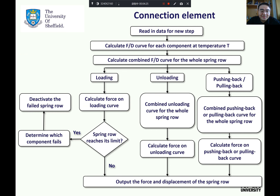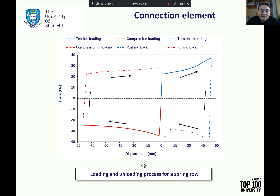The component-based model of the ductile connection has been converted into a connection element following the principles of the finite element method. The detailed calculation procedure of a spring component in the connection element is shown in the flowchart. The complete force-displacement relationship of each spring component and the complete axial load cycle in the component-based model of the ductile connection are shown in the figure. It is assumed that the stiffness of the unloading curve is the same as that of the initial elastic loading curve.